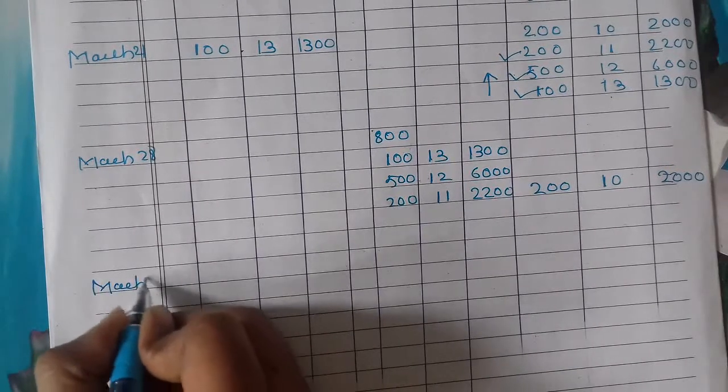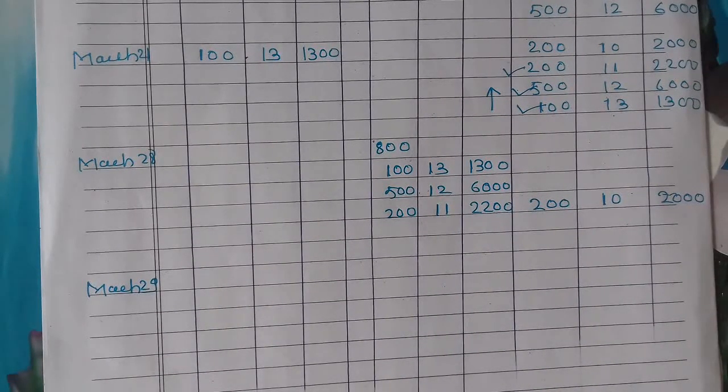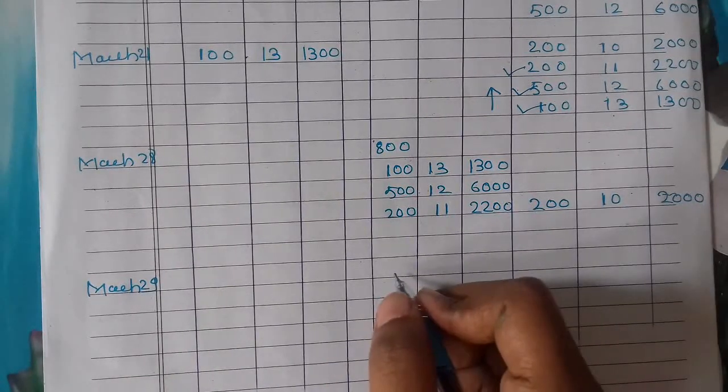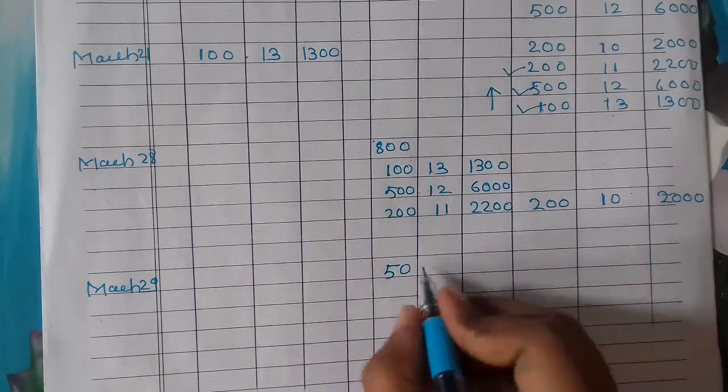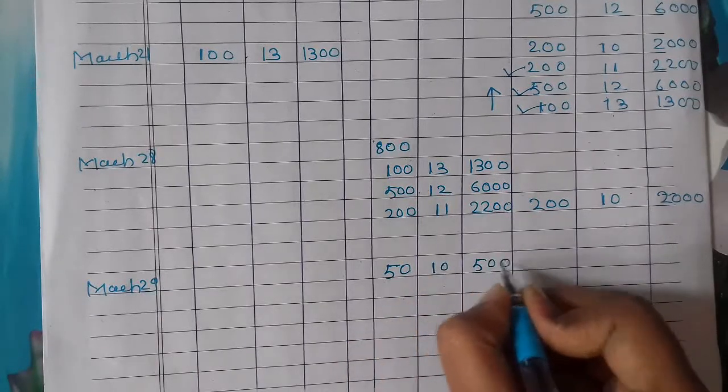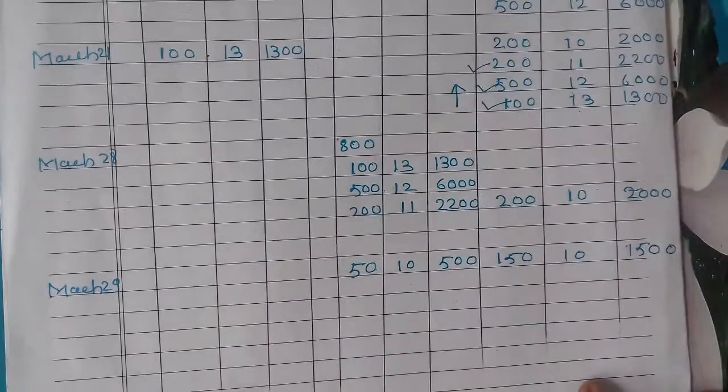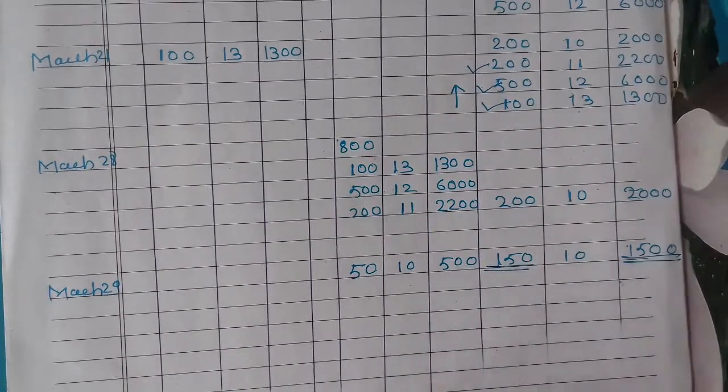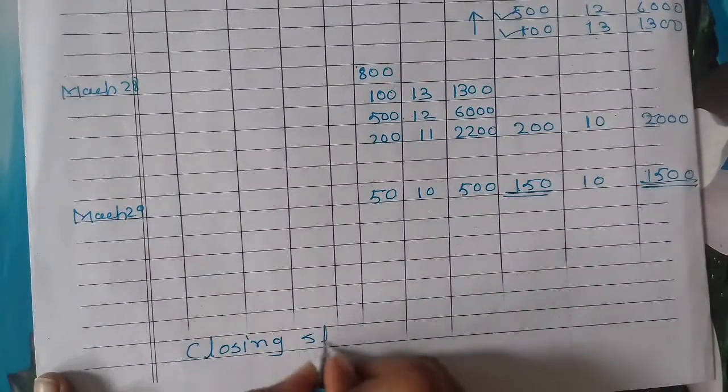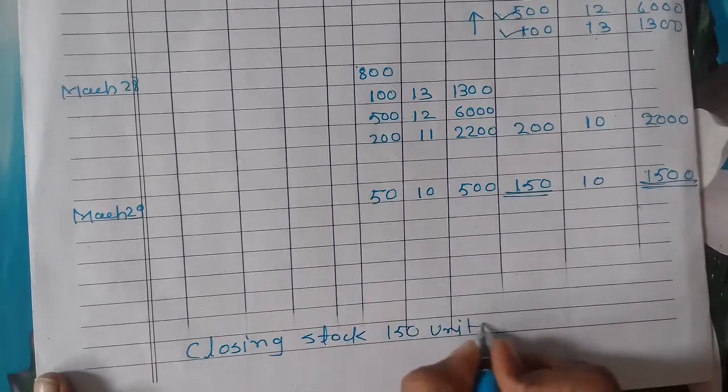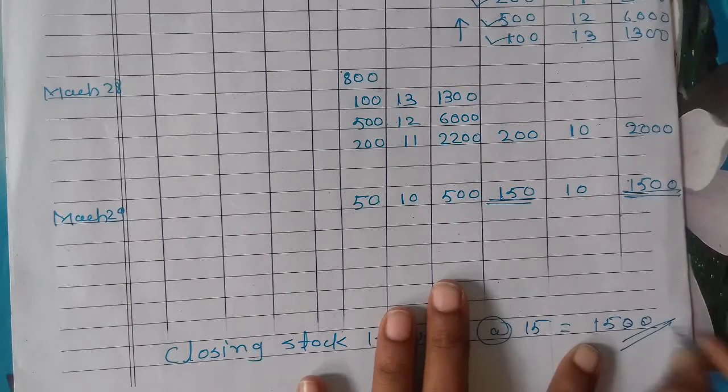Last, March 29. On 29 March there's a shortage of 50 units. Shortage is always shown in the issue column because shortage means material is not available. 50 units at rate 10 is 500. Balancing figure is 150 units at rate 10, amount 1500. Only the amount changed from last problem. Final note: closing stock 150 units at rate 10 equals 1500.